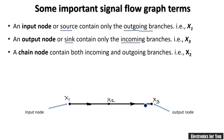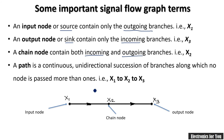One more term is the chain node, which has both incoming and outgoing branches — so x2 is our chain node. A path is a continuous unidirectional succession of branches. To move from one point to another is called a path. For example, moving from x1 to x2 and then x2 to x3 is a continuous unidirectional succession of branches, so it is your path.